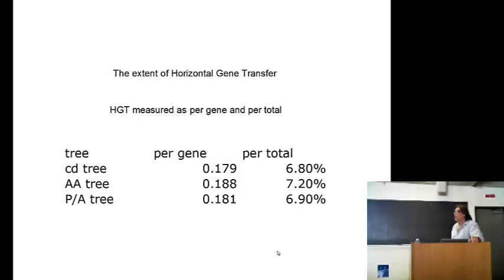And these figures just summarize the percentage and the extent of horizontal gene transfer in different trees, in a combined tree, an amino acid tree, and a presence-absence tree. And it never exceeds 7.5%. And per gene it's maybe 17%, 18%, as I showed on the previous slide. This is a whole genome tree from 170 eukaryote and archaeal and bacterial genomes. That was constructed in 2010.